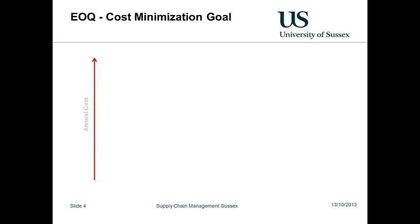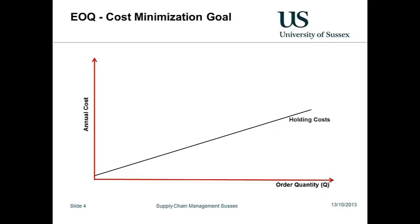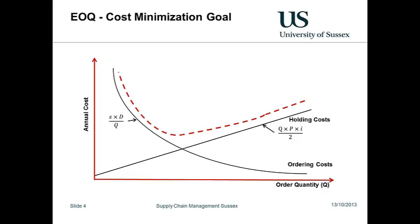This is illustrated here, where annual cost is shown against the order quantity. Holding cost rises linearly as the order quantity increases, whilst ordering cost is inversely proportional to the quantity Q. Sketching the total cost curve, we can see that it reaches a minimum where the holding cost is just balanced by the ordering costs.